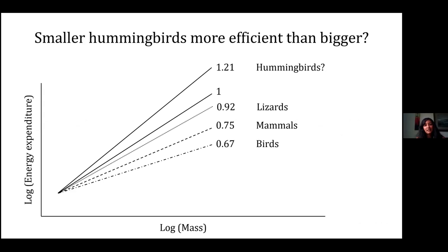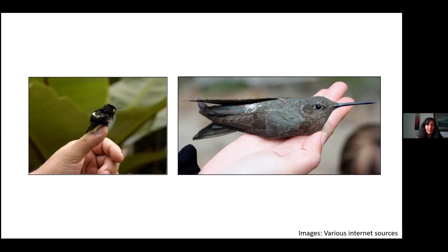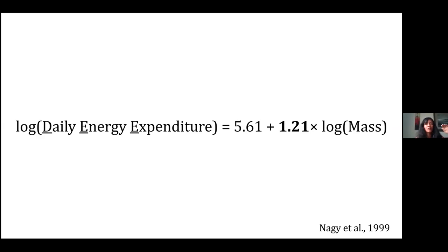This doesn't make any sense according to the laws of economics and physics, because as you get larger and scale things up — like a factory owner who wants to scale things up — you want your unit costs to go down. You want to be more and more efficient as you scale. So this larger bird got scaled up, but became worse and worse at using energy, which is really strange. We wanted to explore this relationship further, because it was based on relatively few species in very few groups of hummingbirds. We wanted to see whether it held true for a wider variety of species and greater distributional range.